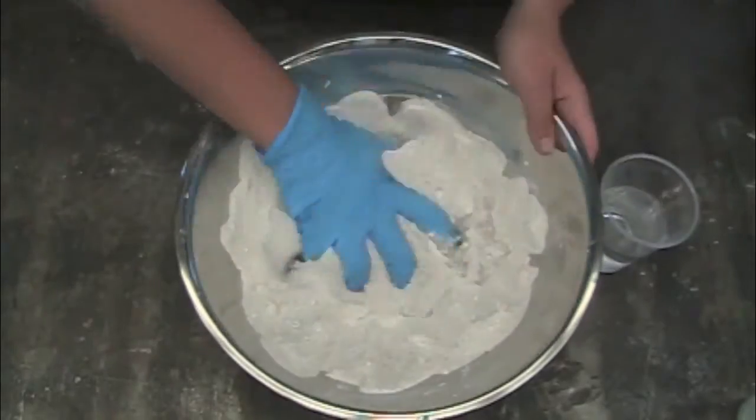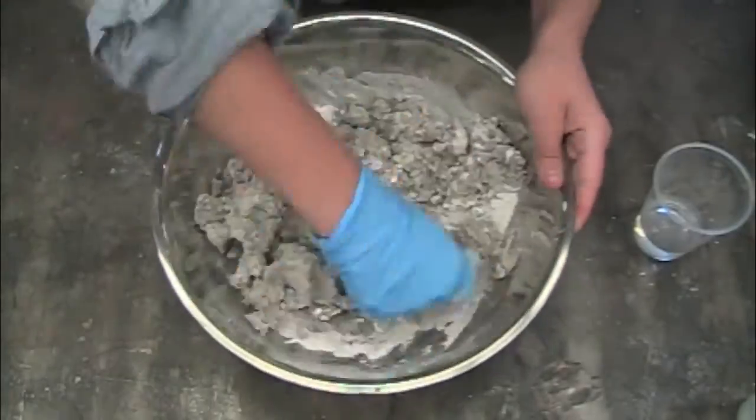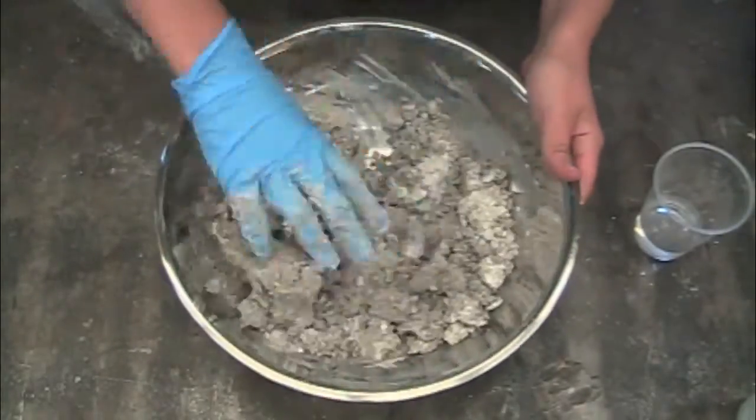Now it's time to start slowly adding water. Wear a glove to protect yourself from the caustic lime. Dig a small hole in the middle of your lime mortar and start by adding a very small amount of water.